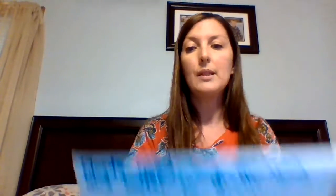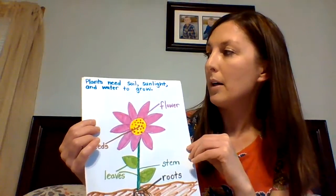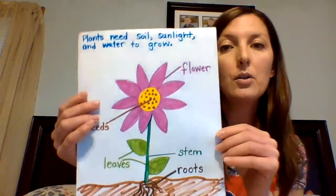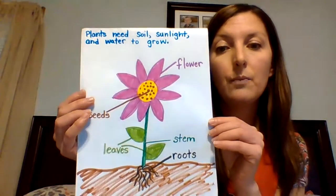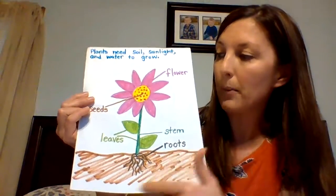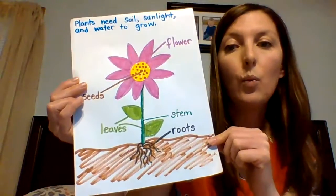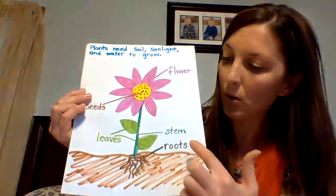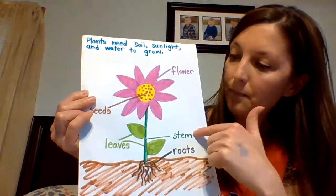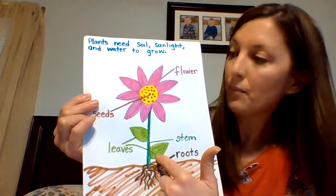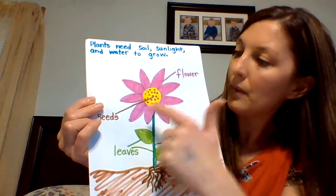For writing today, maybe you could write down a fact from the book, or maybe you could draw a diagram of a plant. I actually did that — I wrote down a fact that I remember from the book. I remember the book told me that plants need soil, sunlight, and water to grow. And then I drew a diagram — a picture of a plant with labels on them to show the parts. So here are the roots and then the stem, the leaves, the flower, and the seeds.